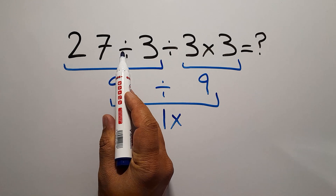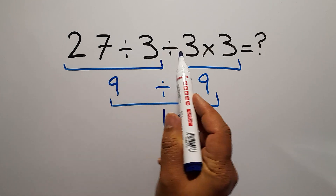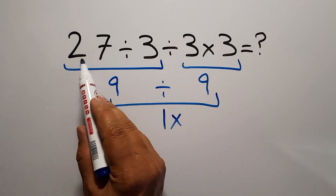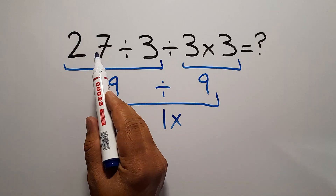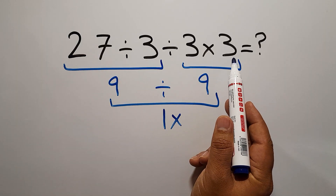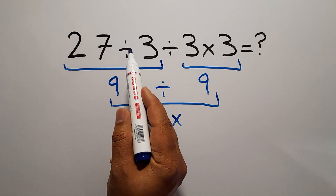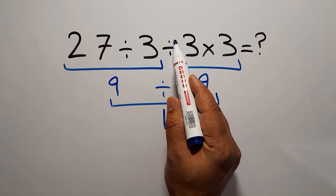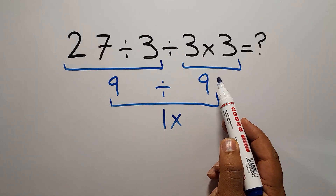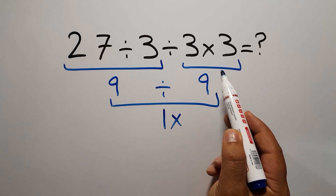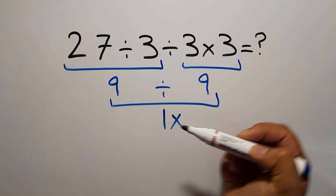Because when we have multiplication and division in one expression, we have to work from left to right. So first we have to do this division, then this division — not this multiplication — and finally we have to do this multiplication.